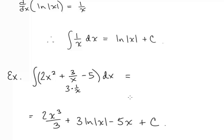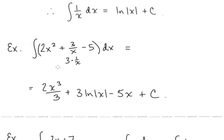Now let's take a look at this example: the antiderivative of 2x squared plus 3 over x minus 5. I notice that 3 over x is 3 times 1 over x, so I want to use our new integration rule. The antiderivative of 2x squared is 2x cubed over 3, the antiderivative of 3 over x is 3 ln of absolute value of x, the antiderivative of negative 5 is negative 5x, and we add our integration constant.